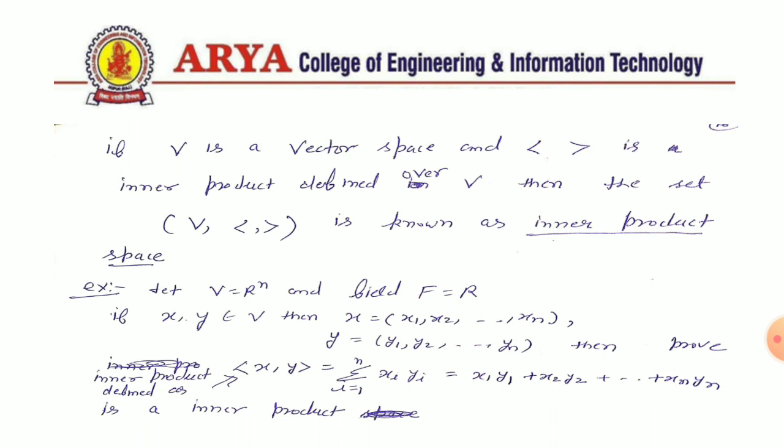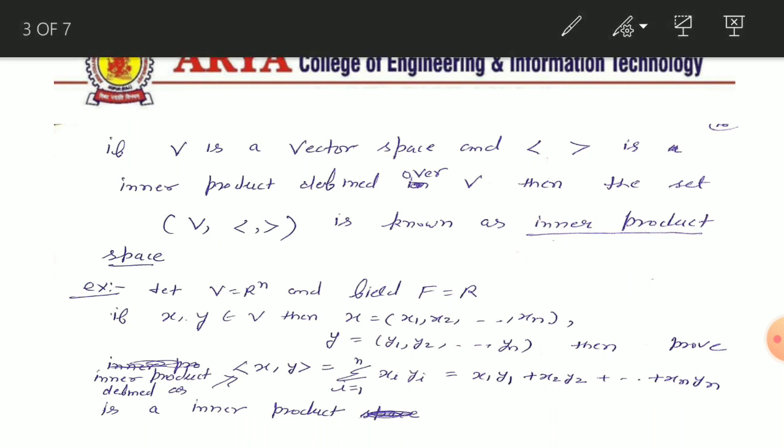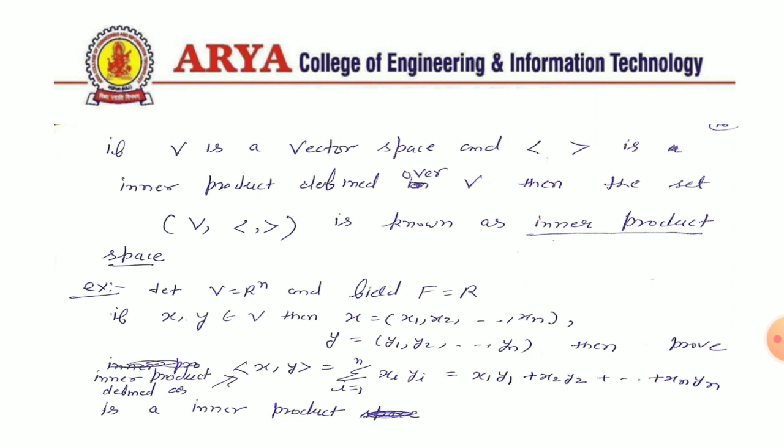For example, let V equal R^n and F be a field of real numbers. If we take two vectors X, Y belonging to V, where X is a set of n-tuples and Y is a vector of n-tuples, then we define the inner product (X, Y) as the summation from i=1 to n of X_i times Y_i, which equals X1·Y1 + X2·Y2 + ... + Xn·Yn. We have to prove that V is an inner product space.